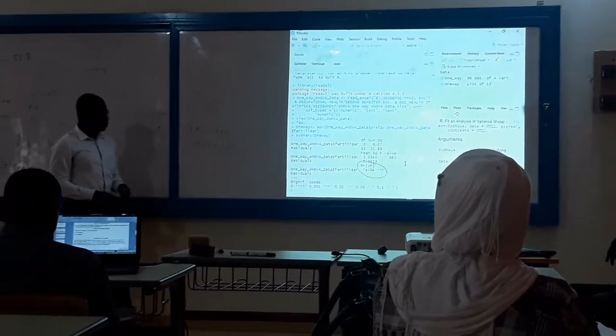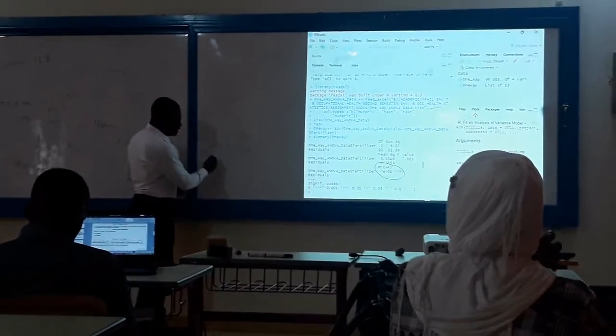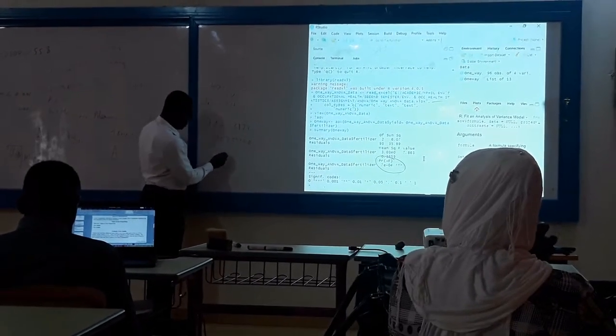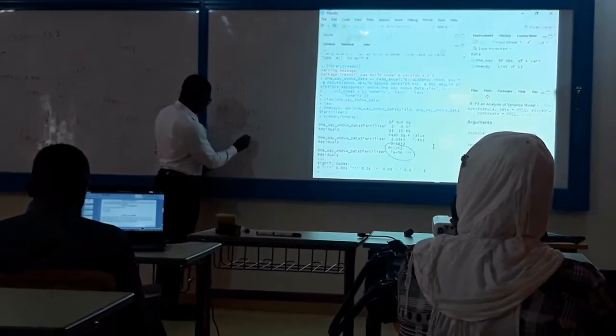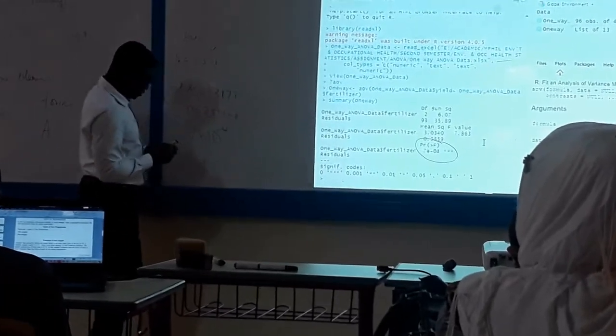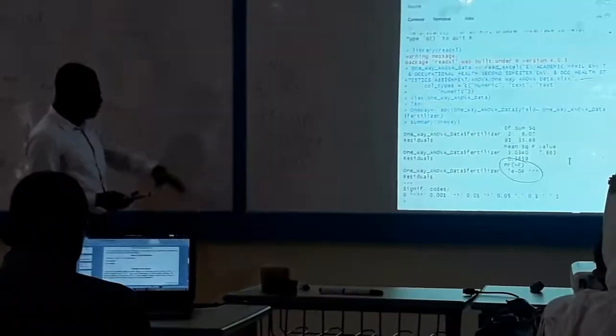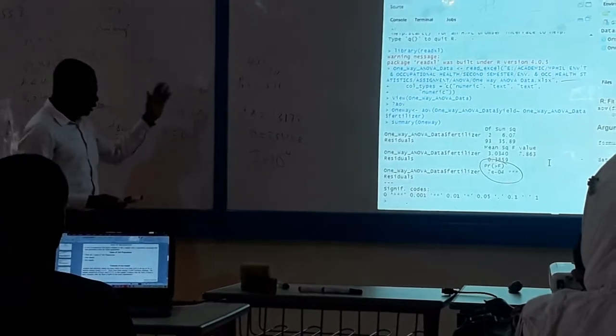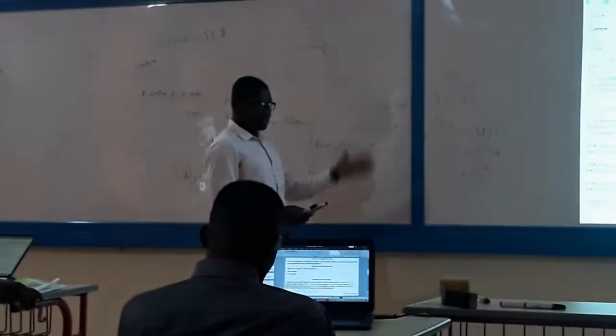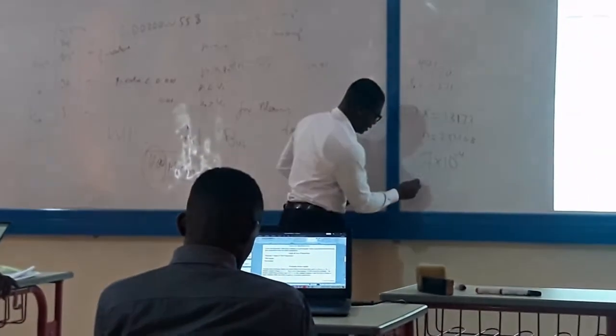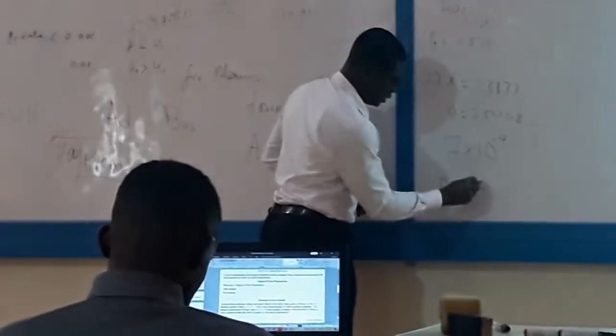You can look at the p-value. It's actually seven times ten to the power of negative four. If you take a decimal, you get something like 0.0007.